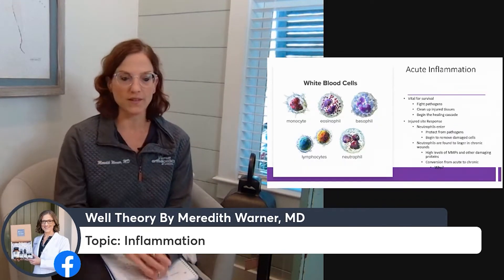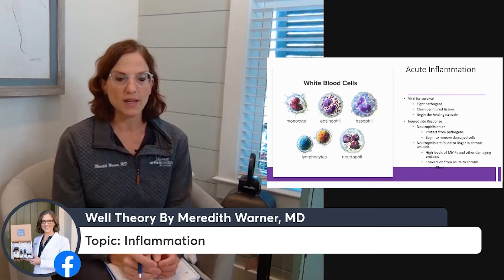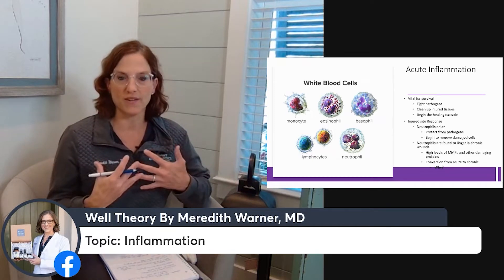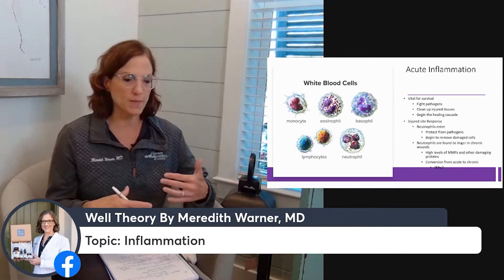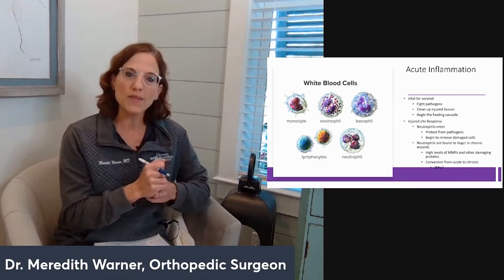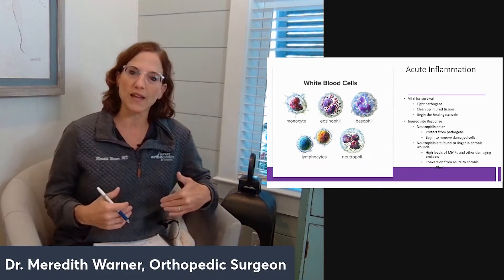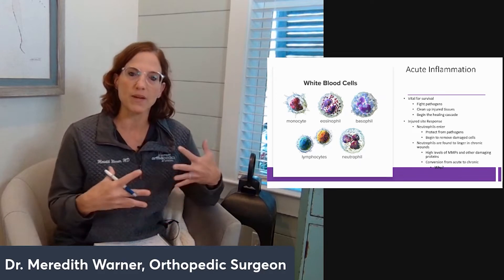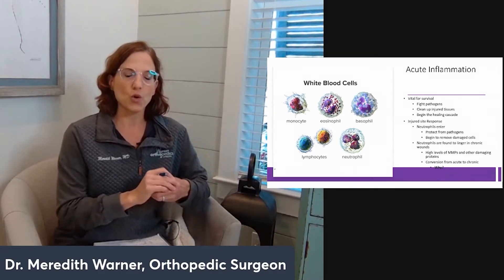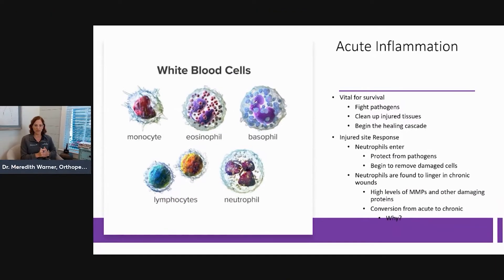These are your different white blood cells that have been discovered over the years. Acute inflammation is not a bad thing — we want that. We want the ability to fight infection, clean up skin after a cut or scrape, and sense tumor cells or cancers and attack them before they become a problem. We want some level of inflammation; we just don't want chronic inflammation.